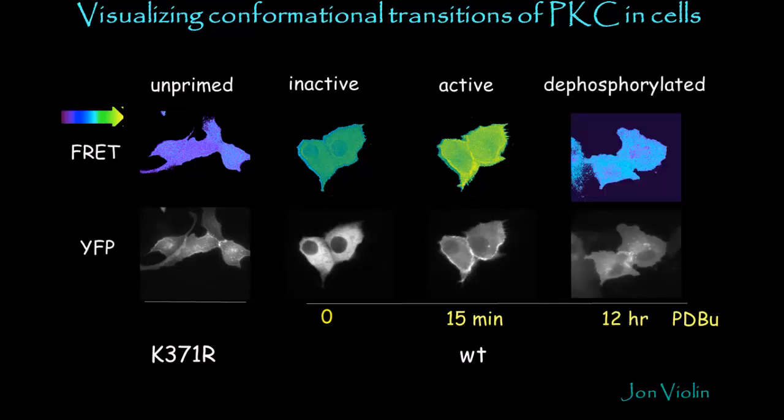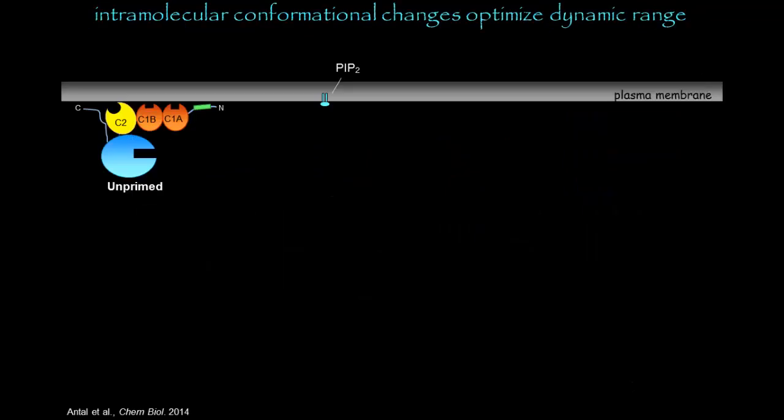If we downregulate protein kinase C by prolonged treatment with phorbol esters, which results in dephosphorylation of protein kinase C, we go back to having low FRET, indicating that the amino and carboxy termini are far apart in the unprimed enzyme and far apart when the enzyme has been dephosphorylated.